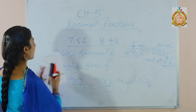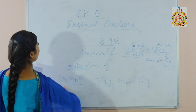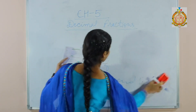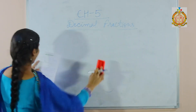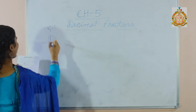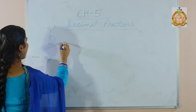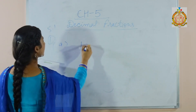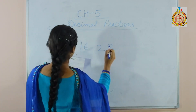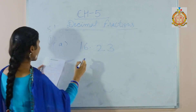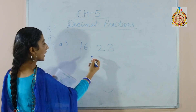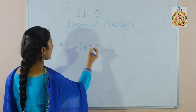Now let's start exercise 5.1. First sum from exercise 5.1, part A: 16.23. This fraction we have to write in words.